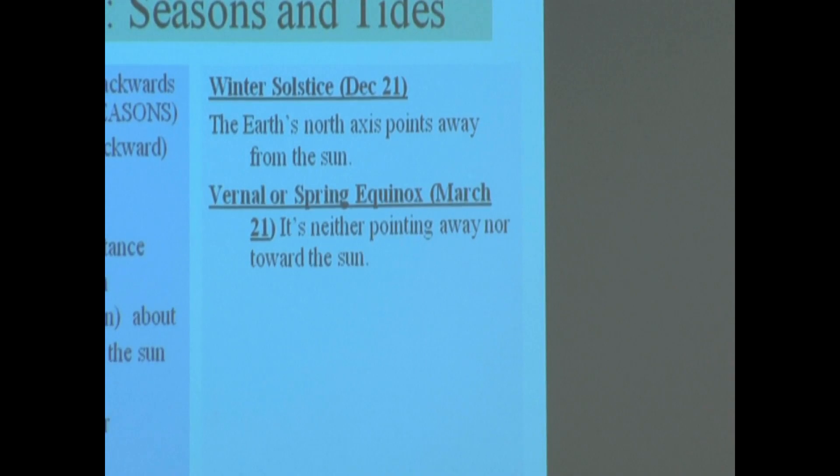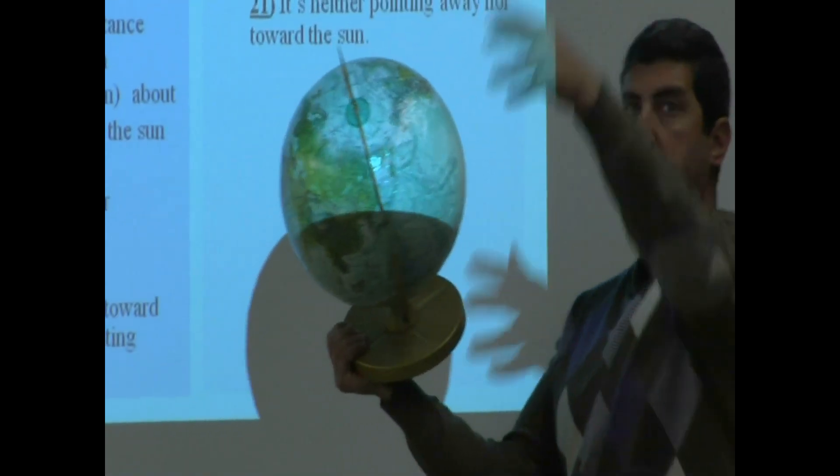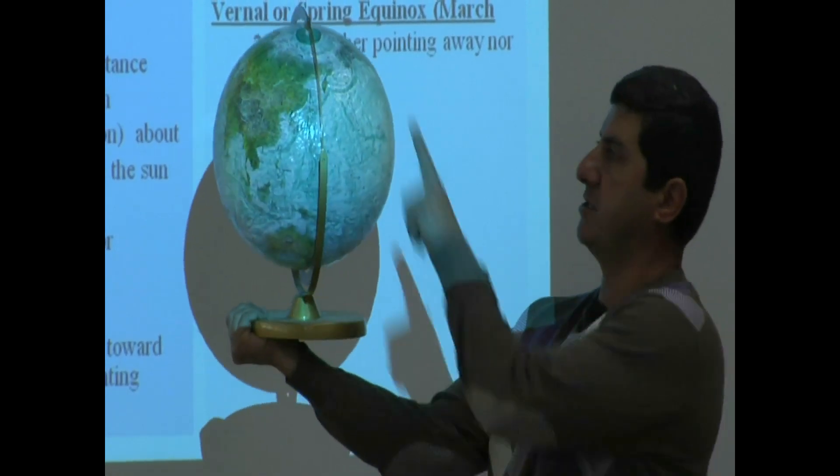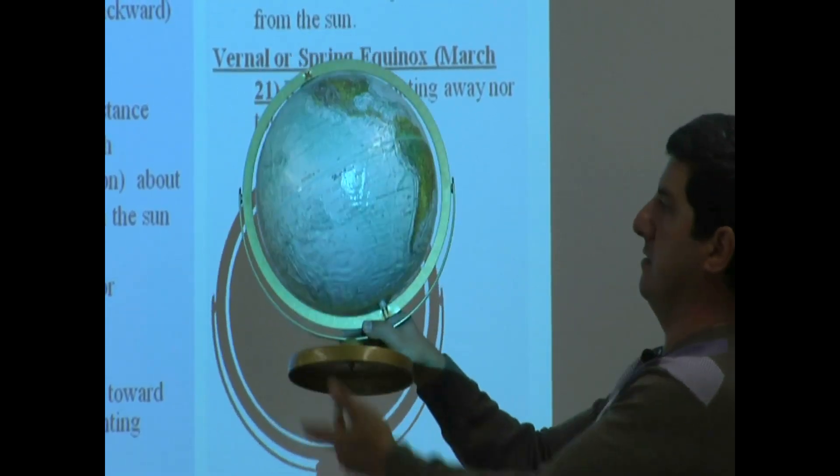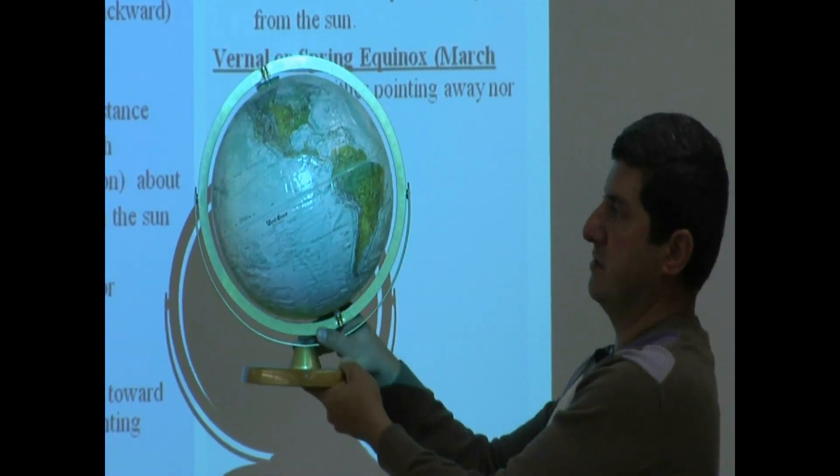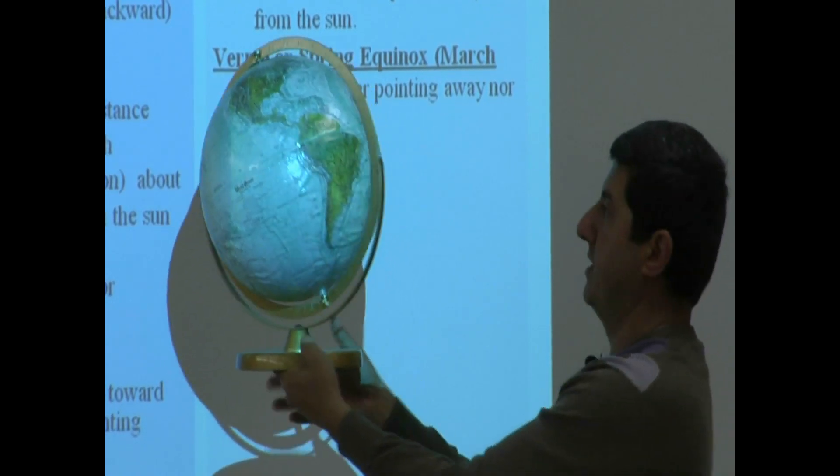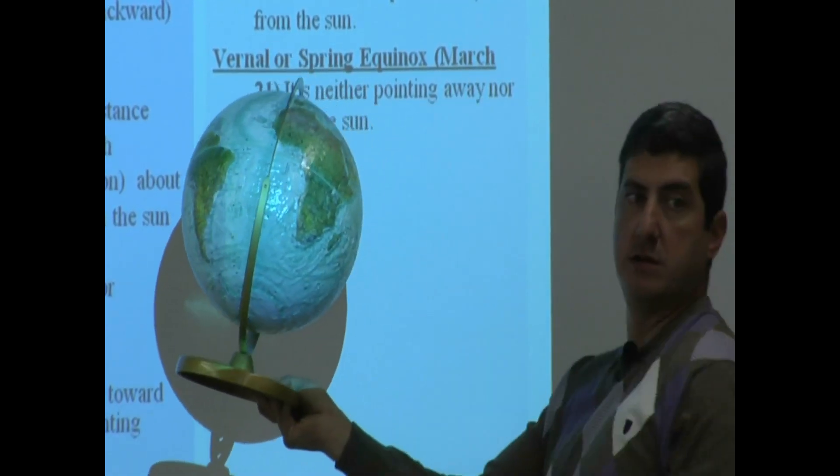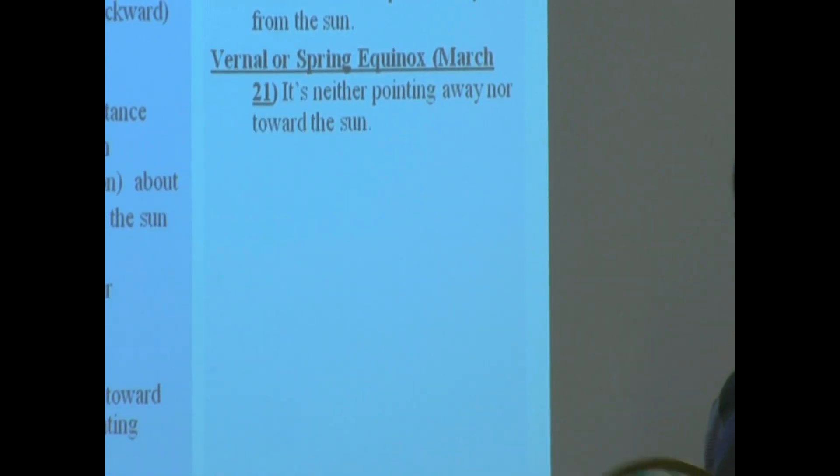So if this is the Earth, you see how it's tilted? Imagine the projector is the Sun. It's tilted towards the Sun. This is June. This would be tilted this way compared to the Sun. That would be like March 21 or September 21. And then this way, pointing away, is December 21.